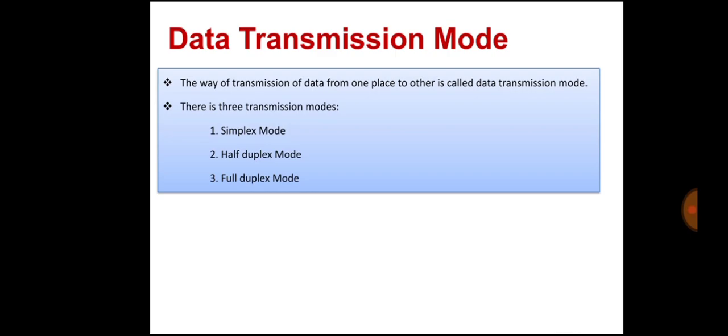In simplex type mode of transmission, data can be sent only in one direction. That is, communication is unidirectional. We cannot send a message back to the sender. Unidirectional communication is done in simplex systems where we just need to send a command or signal and do not expect any response back. Examples of simplex mode include loudspeakers, television broadcasting, keyboard and monitor.